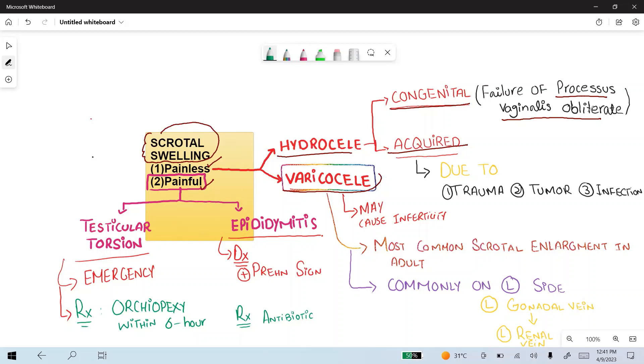During this process, they acquire a cover of the peritoneum known as the processus vaginalis. Normally, this processus vaginalis communicates with the peritoneum and is normally obliterated. After obliteration of the processus vaginalis, it turns into the tunica vaginalis.